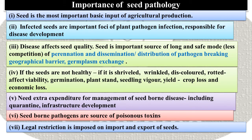Now, the importance of seed pathology. First of all, seed is the most important basic input of agricultural production. Infected seeds are important foci of plant pathogen infection responsible for disease development. Disease affects seed quality. Seeds are an important source of long-distance, safe modes of perennation and dissemination, distribution of pathogens, breaking geographical barriers, and germplasm exchange.